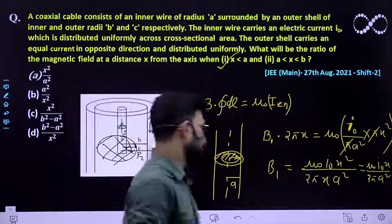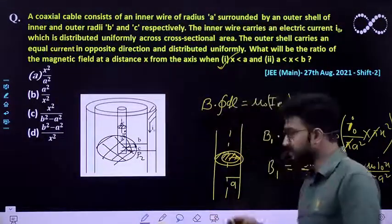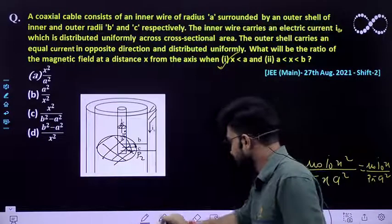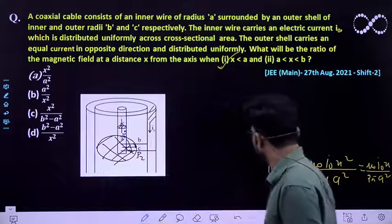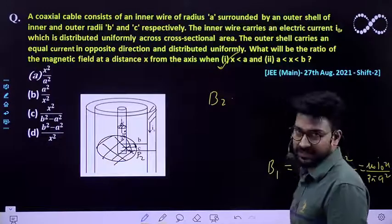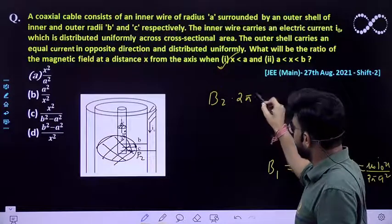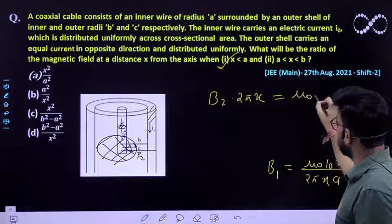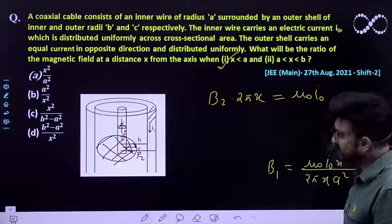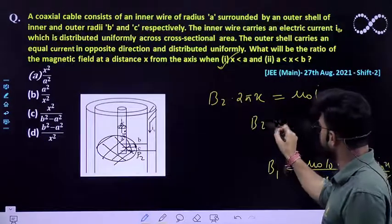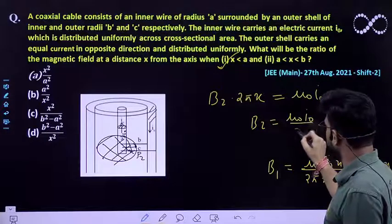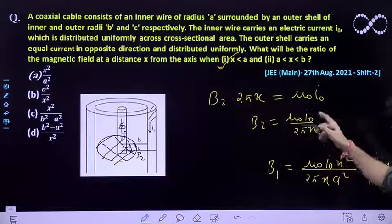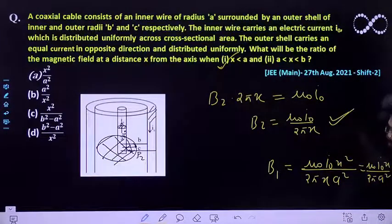So what is the value of B2 that you need to find out? Again we will be doing the Ampere's circuit law. So B2 dot dL, what is dL over here is 2 pi x, must be equal to mu0 times I0. So this B2 would be mu0 I0 by 2 pi x. I hope it is clear. So this is the expression that we are getting for the value of B2.